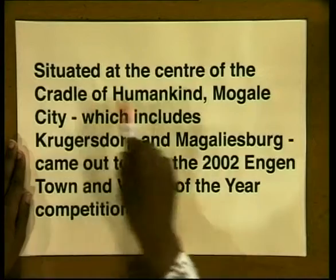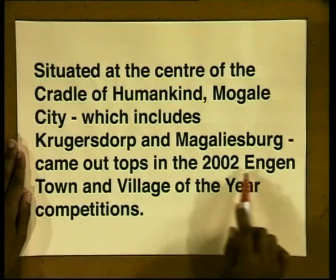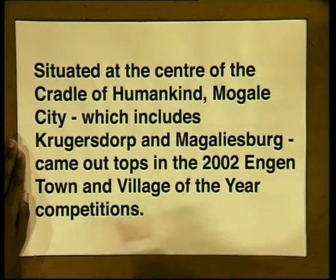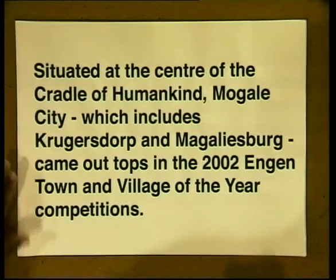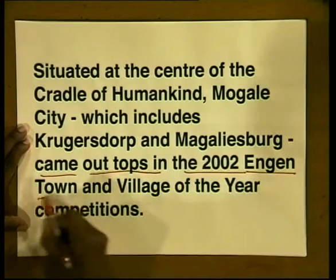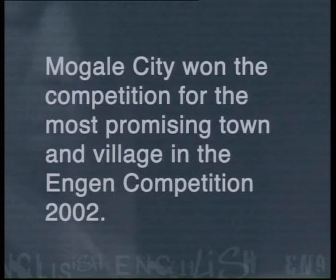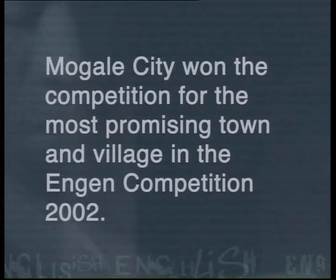Situated at the center of the cradle of humankind, Mokhale City, which includes Krugersdorp and Mokhaleesburg, came out tops in the 2002 Engine Town and Village of the Year competitions. That's the opening paragraph. Now, what's the key information that it contains? You could condense this paragraph like this: Mokhale City won the competition for the most promising town and village in the Engine competition of 2002. Do you see how, even though the information has been shortened, the sentence could still stand on its own?